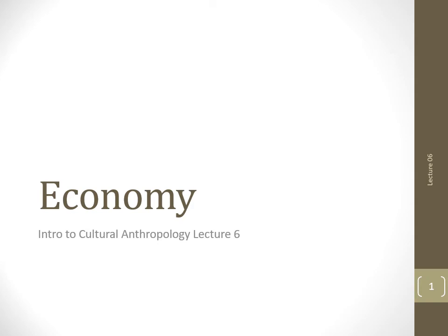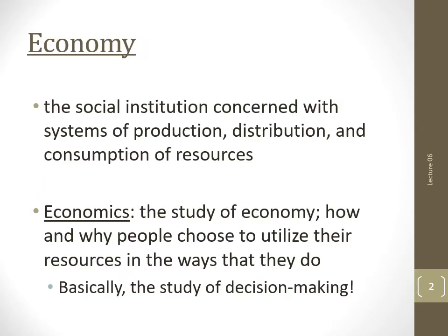Now that we've discussed how people get their food, the most basic necessity of life, we can start talking about how they get the rest of what they need. This falls under the umbrella of economy. The economy is the social institution concerned with systems of production, distribution, and consumption of resources.